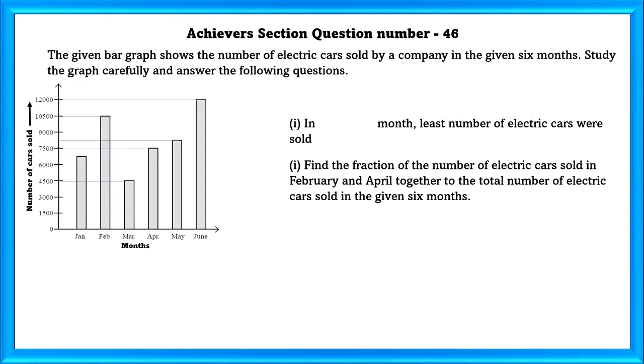In which month were the least number of electric cars sold? In the March month, least number of electric cars were sold. In the March month, only 4500 cars were sold. Second one.